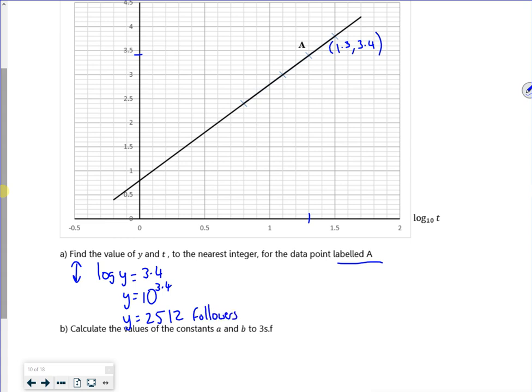This is my Instagram. And going across, we've said that log t is 1.3, so t is 10 to the power of 1.3. So t is roughly 20 days to the nearest integer. Once again, write down a better answer than it is around here.